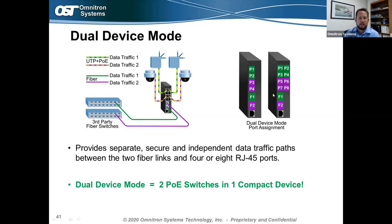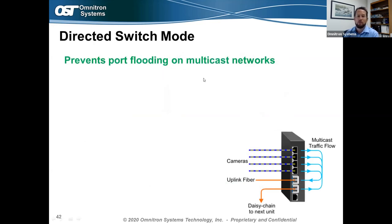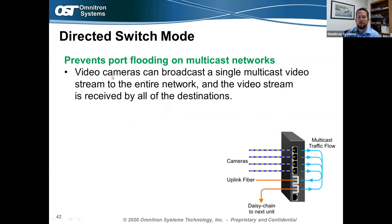In dual device mode, fiber port 1 controls the top four copper PoE ports and fiber port 2 is associated with the bottom four PoE ports. This allows network managers running two separate networks — like an IT network and a security network — to send both data streams to one location. There's typically not room in a NEMA enclosure for multiple PoE switches, so you can send two independent networks to one PoE switch with data completely separated from each other.